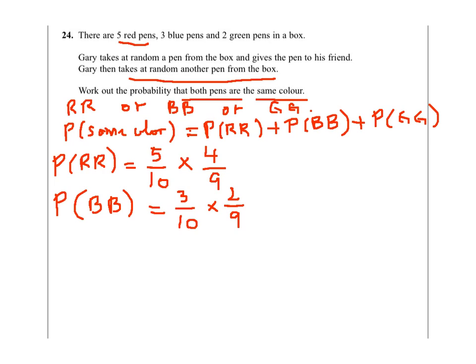Now the probability of getting green and green. There are two green pens in the box, so it will be 2 out of 10. Then in the second round, once he gives the first one to his friend, there will be one green left out of nine.